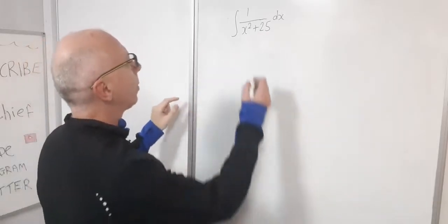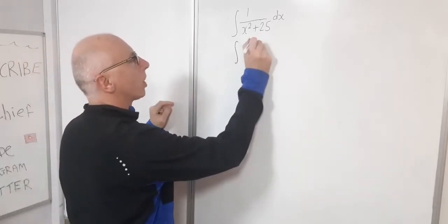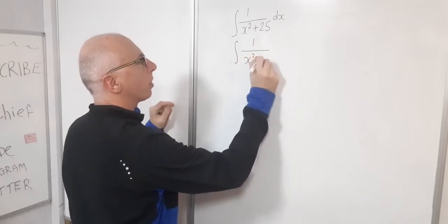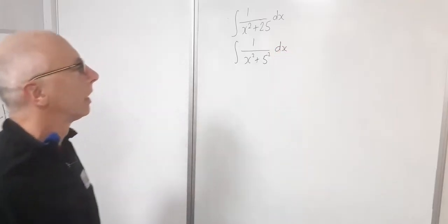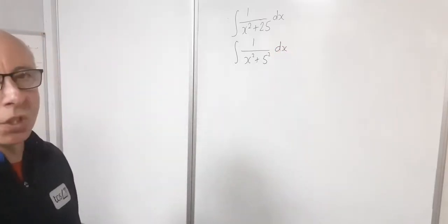So let's write that up on the board. So let's just change what we've got. So x squared plus 5 squared dx. So now we're looking promising, this is looking like something that we can do.